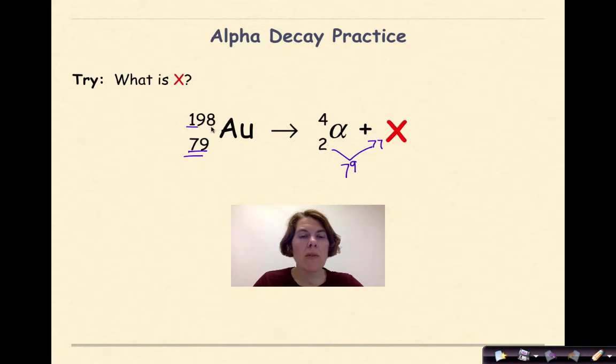The mass number for gold over here is 198. So ultimately, the alpha particle plus the mass number of the x also has to equal 198. So 198 take away 4, I'll get 194. So the x that is being represented here will be Ir, a mass number of 194, and an atomic number of 77.